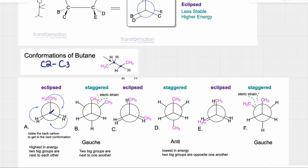The trick is to draw all of the conformations. We will keep the front carbon the same and just redraw it the same for all of them. We will rotate the back carbon to go from eclipsed to staggered, eclipsed, staggered, eclipsed, staggered, and so on until we go back to where we began. Altogether we will have six different conformations: three staggered and three eclipsed. If we rotate from eclipsed to staggered, this methyl group will now be here, this hydrogen will now be here, and this hydrogen will now be here. That's my staggered conformation.